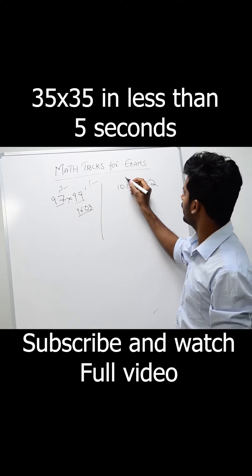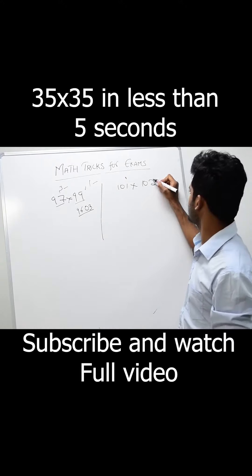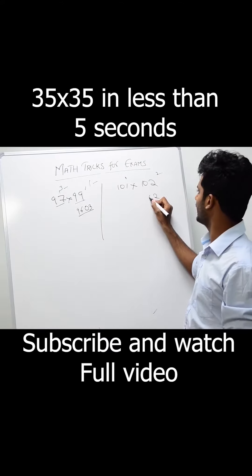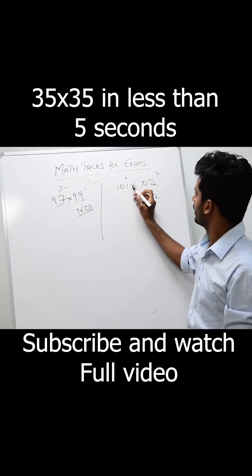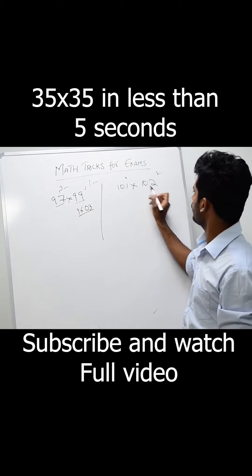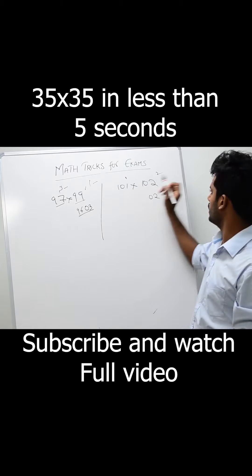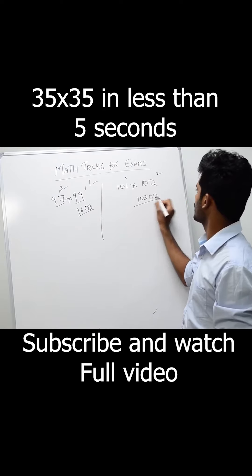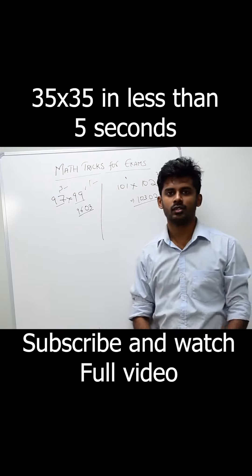So it is 1 above 100, and this one is 2 above 100. 1 times 2 equals 2. So we are writing as 02. Again, 101 plus 2 or 102 plus 1, it gives you the same result, which is 103. So this is the number. So it's that simple.